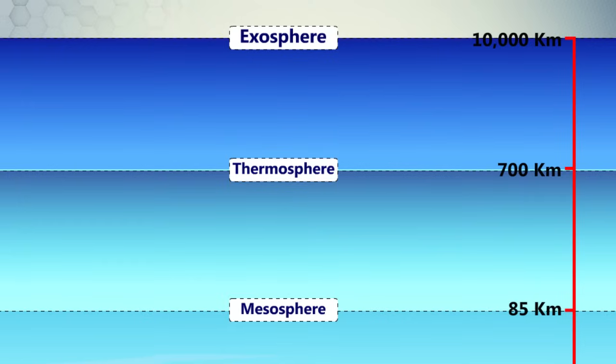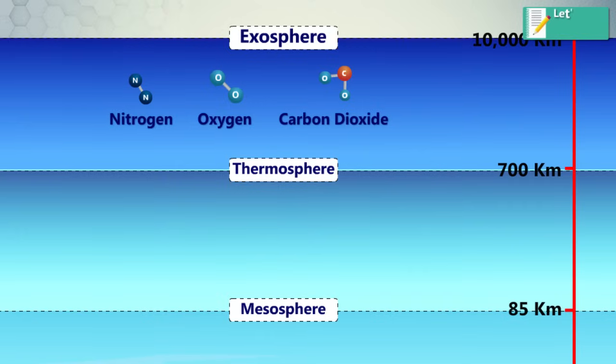This layer is mainly composed of extremely low densities of hydrogen, helium, and several heavier molecules including nitrogen, oxygen, and carbon dioxide. Closer to the exobase, the atoms and molecules are so far apart that they can travel hundreds of kilometers without colliding with one another. Thus, the exosphere no longer behaves like a gas, and the particles constantly escape into space. These free-moving particles follow ballistic trajectories and may migrate in and out of the magnetosphere or the solar wind.